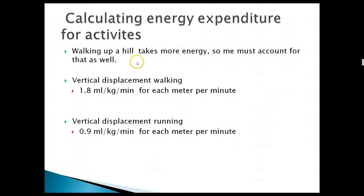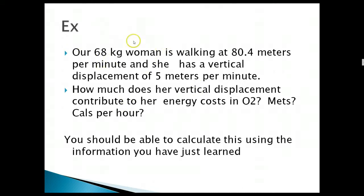Obviously walking uphill takes more energy, so we must account for that as well. On the last page, we had the horizontal displacement, which is the flat. Now we're going to add the vertical displacement, which is up and down, for example, up the hill. So the vertical displacement for walking is 1.8 milliliters per kilogram per minute for each meter per minute. Again, it depends on how many meters per minute you're going uphill. And you can see it's highly dependent on your body weight. The body weight is very important. Somebody who's 220 pounds takes twice as much energy as somebody who is 110 pounds to get up the same hill. We could use a 68-kilogram woman is walking at 80.4 meters per minute, and she has a vertical displacement of 5 meters per minute. This is about junior high algebra. Everybody should be able to do this.